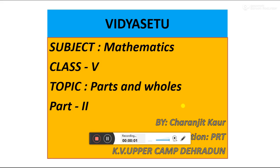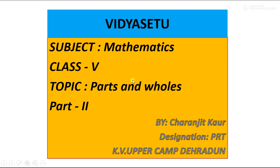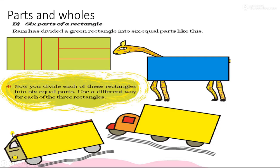Yes children, today we will do next exercises of lesson parts and holes. Rani has divided a green rectangle into 6 equal parts like this. Now you have to divide all these 3 rectangles into different ways into 6 equal parts.